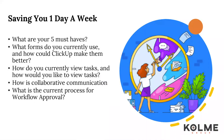Now that you've seen some of what ClickUp can do, consider what you want it to do for your agency. Consider having the ClickUp sponsor and your team document the following: what are your five must-haves, what forms do you currently use, how do you currently view tasks and how would you like to view tasks, what is your team's method of collaborative communication, and what is the content process for workflow approval? To help ensure your agency has the most productive onboarding experience and can hit the ground running, we suggest you have answers for those questions at the first meeting.